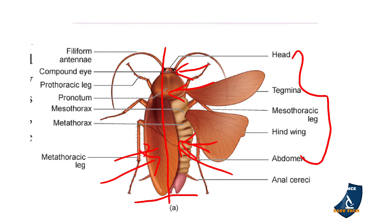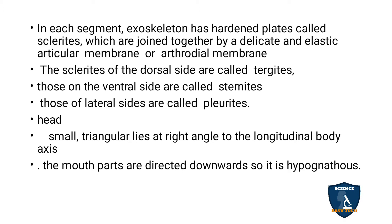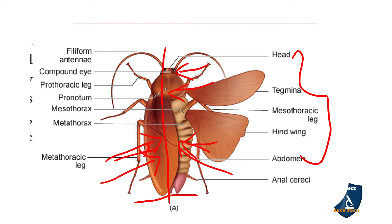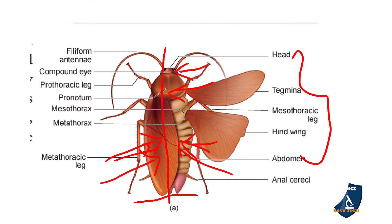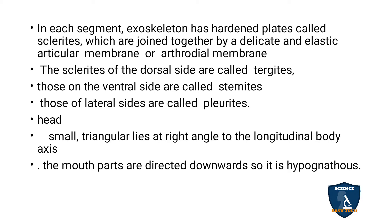The brown colour is due to the chitinous exoskeleton. In each segment, the exoskeleton has hardened plates called sclerites. These sclerites are joined together by a delicate and elastic articular membrane, also called the arthrodial membrane.